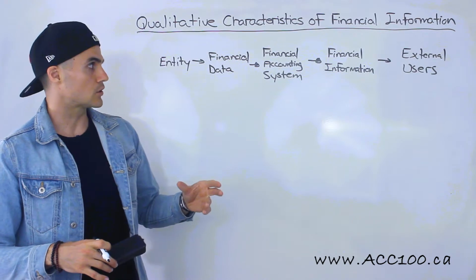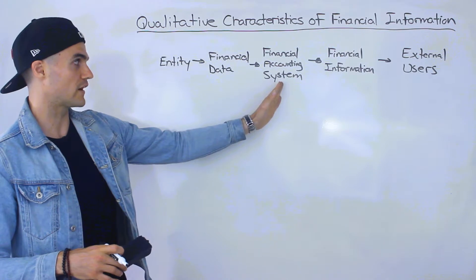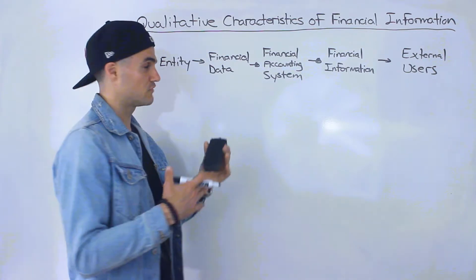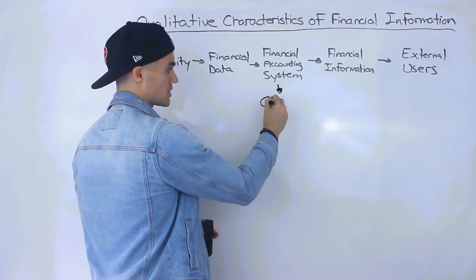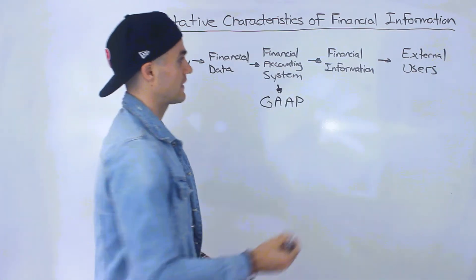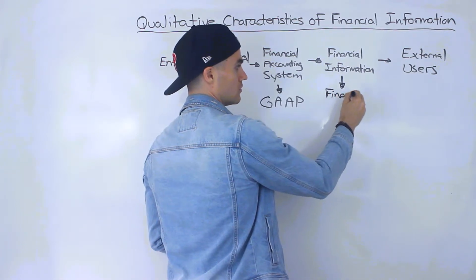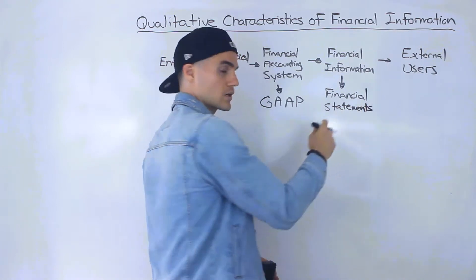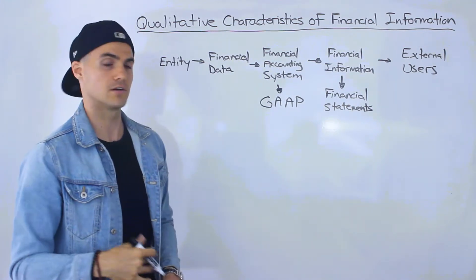Quick little review from the previous videos. We had this flowchart here for a financial accounting system. We have an entity and financial data. That financial data gets put through a financial accounting system, through a specific set of rules called GAAP — Generally Accepted Accounting Principles. And then you get financial information, more specifically financial statements. I mentioned the four different financial statements: balance sheet, income statement, cash flow statement, and statement of retained earnings.